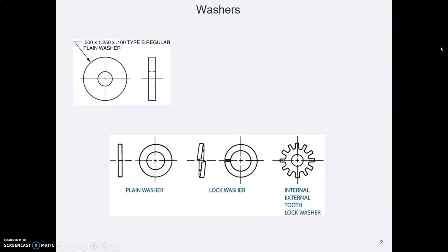So let's start with washers. The very simplest kind of washer is just a flat piece of metal shaped like a circle, a plain washer.